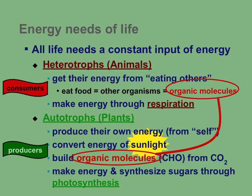Autotrophs literally means self-feeder or self-eater. They produce their own energy by converting — here in the case of plants — converting sunlight energy to organic molecules, using that to energize the building of organic molecules, things that are carbon, hydrogen, oxygen-based, really carbon molecules. The carbon base originates in the carbon dioxide.